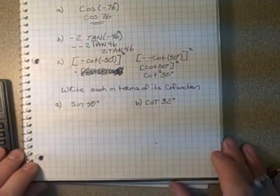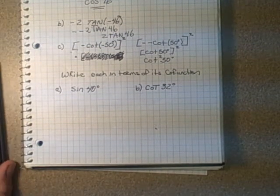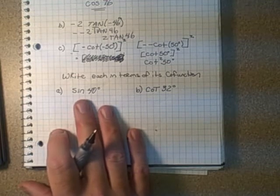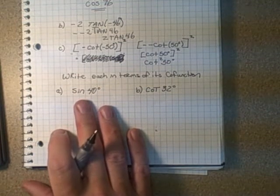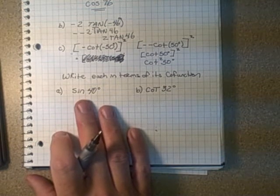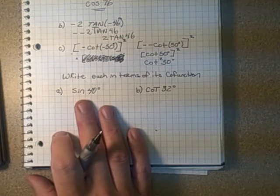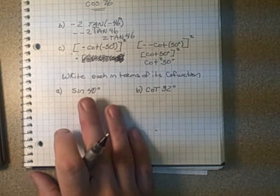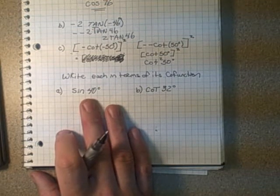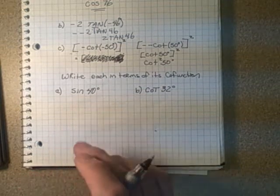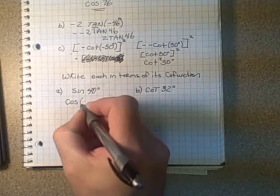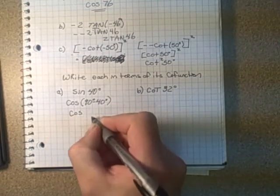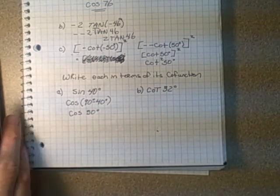Now we'll look at writing the angle measure in terms of a co-function angle, using page 154. There are six co-function identities there. For sine 40, the co-function of sine is cosine of 90 minus theta. So sine 40 becomes cosine of 90 minus 40, which is cosine of 50 degrees. The sine of 40 degrees is the same as the cosine of 50 degrees.